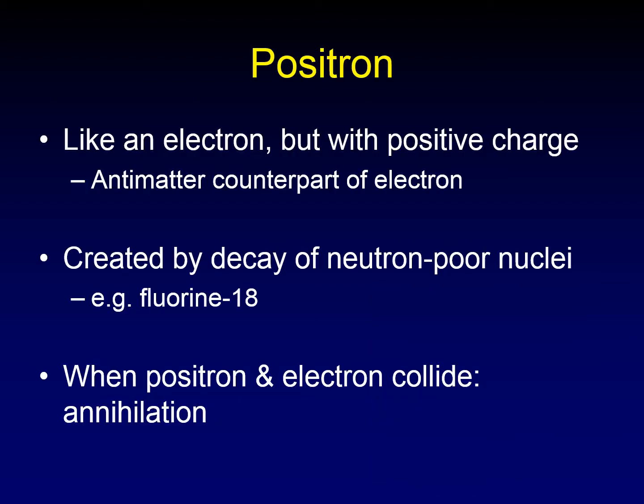So what's a positron? A positron is like an electron, but it has a positive charge instead of a negative charge. It's the antimatter counterpart of the electron.